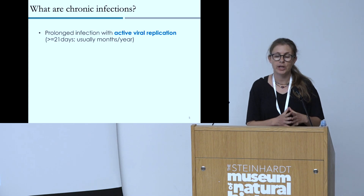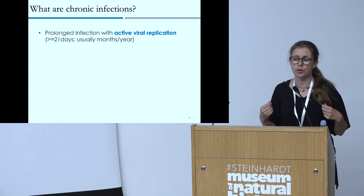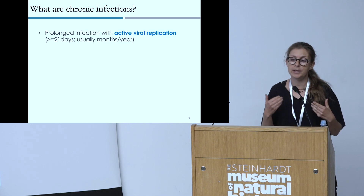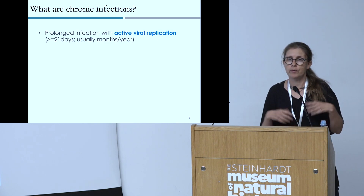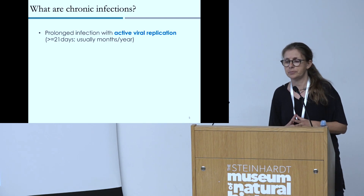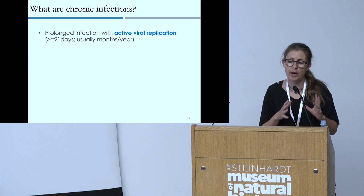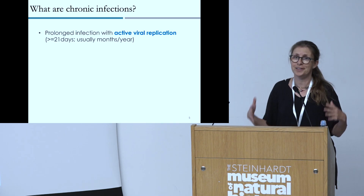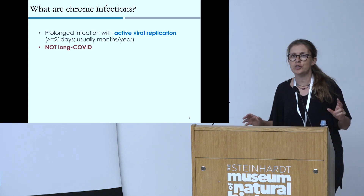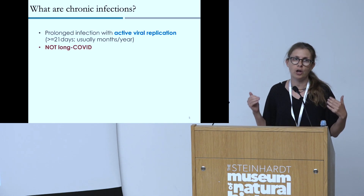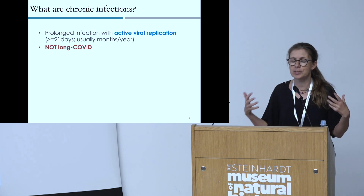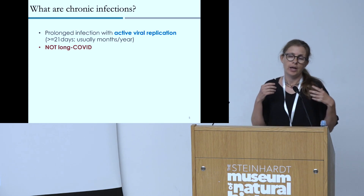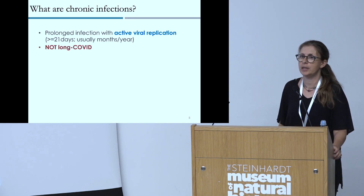Let's first define what chronic infections are. Chronic infections with SARS-CoV-2 are defined as prolonged infections — more than 21 days — where there is active viral replication. In fact, most of the cases we look at span months; the longest case reported to date is over a year of someone chronically infected with the virus. This is not to be confused with long COVID. In long COVID, symptoms persist but there is no active viral replication. In chronic infections, we have evidence of the virus actually continuing to replicate in these patients.